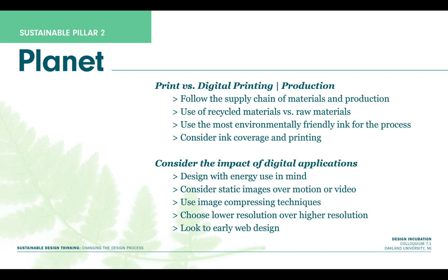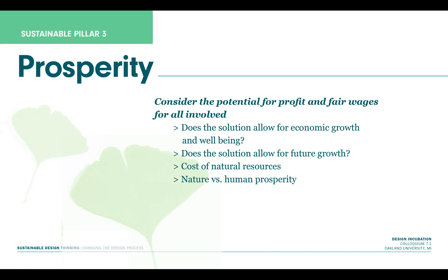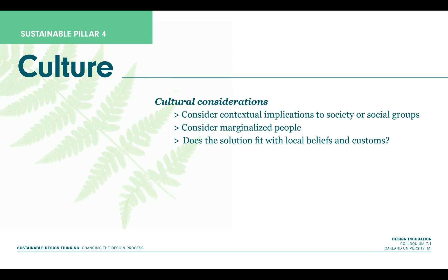It would be important to weigh the pros and cons of both printed deliverables and digital applications. For printing, that might include evaluating ink, paper, and other substrates. For digital, it might mean avoiding energy-intensive videos and motion graphics. The third pillar is prosperity, and it should determine whether or not the project has potential for economic growth and well-being — are fair wages for all involved, and does it contribute to the local economy? It should really be a balance of nature and human prosperity. The last sustainable pillar is culture, which should consider the implication of the proposed solution on culture by looking at contextual implications to society, implications to marginalized groups, and to local customs and beliefs.